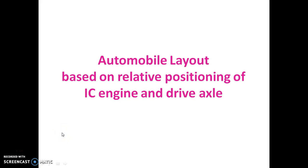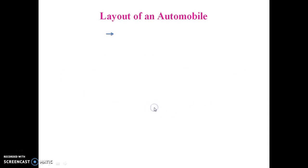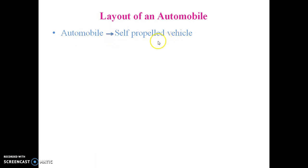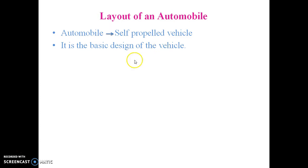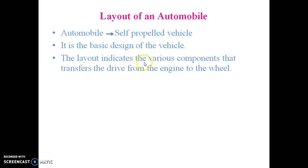In this session we are going to discuss the automobile layout based on relative positioning of the IC engine and the drive axle. The automobile is a self-propelled vehicle in which the power is developed within the vehicle itself. The layout of an automobile is the basic design of the vehicle in which the various components transfer the drive from the engine to the wheel.